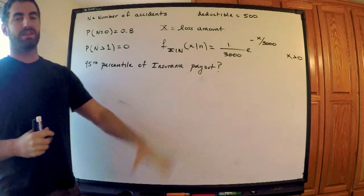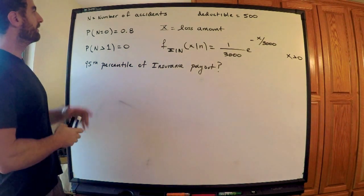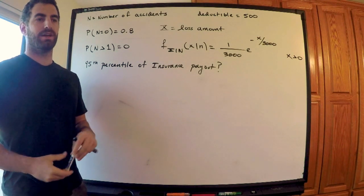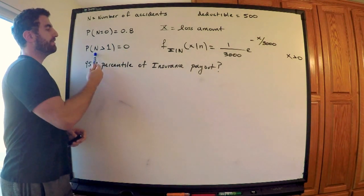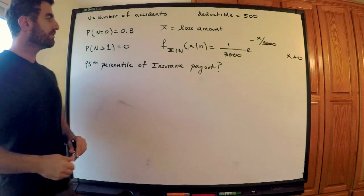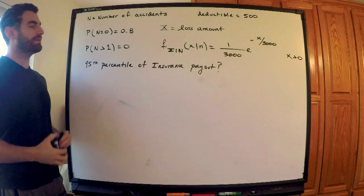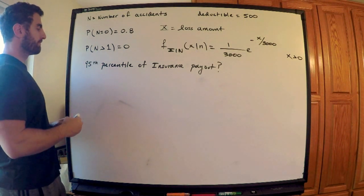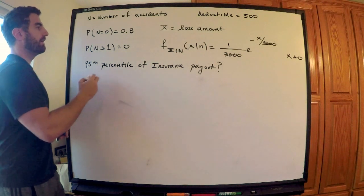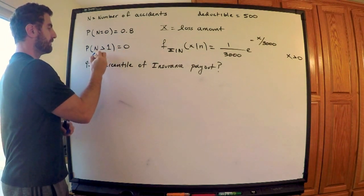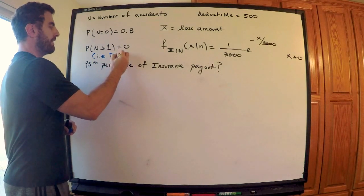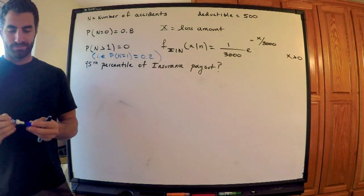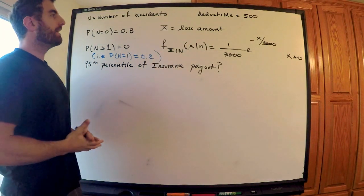This is the setup they gave me — the only information provided. The probability that an insured has zero accidents is 0.8, and the probability they have more than one is zero. Since these must add up to one, I immediately know that the probability N equals one is 0.2.